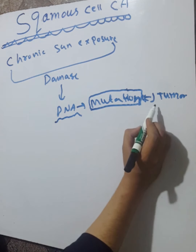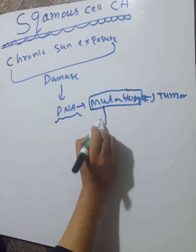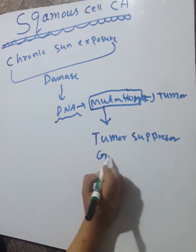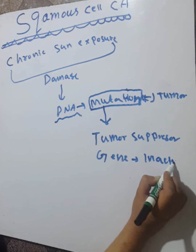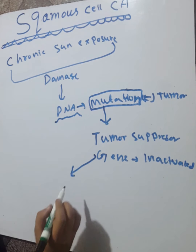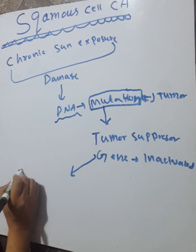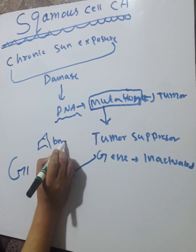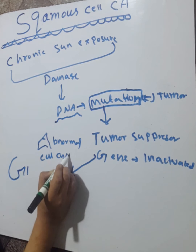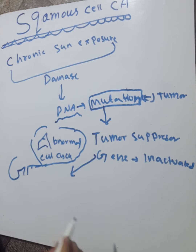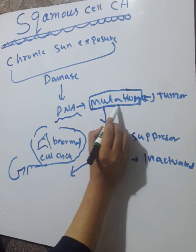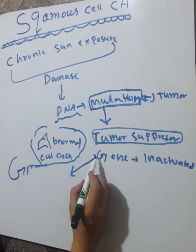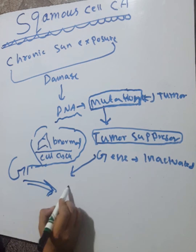When mutations in the DNA occur, the tumor suppressor genes become inactivated. Normally, the tumor suppressor genes arrest the abnormal cell cycle at the G1 phase. When they become inactivated, abnormal cell growth occurs, which we call squamous cell carcinoma.